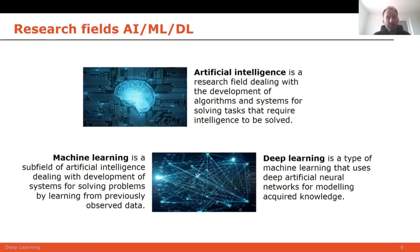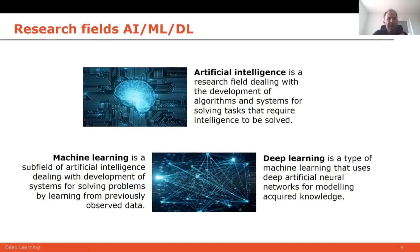Machine learning is just one subfield of artificial intelligence. It's the field based on development of systems that, for solving problems, use models learned from previously observed data. We humans also learn an entire lifetime and make predictions and plans based on what we saw in the past, learning patterns from those observations to improve ourselves. This is the goal of machine learning. Deep learning is just one type of machine learning that uses deep artificial neural networks for modeling that acquired knowledge.